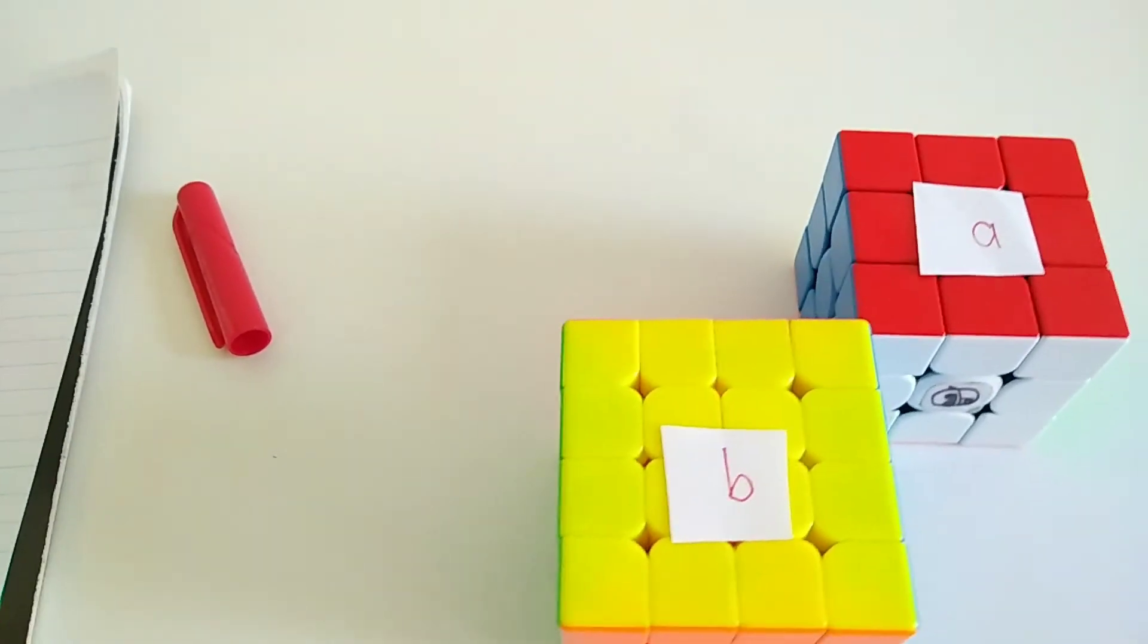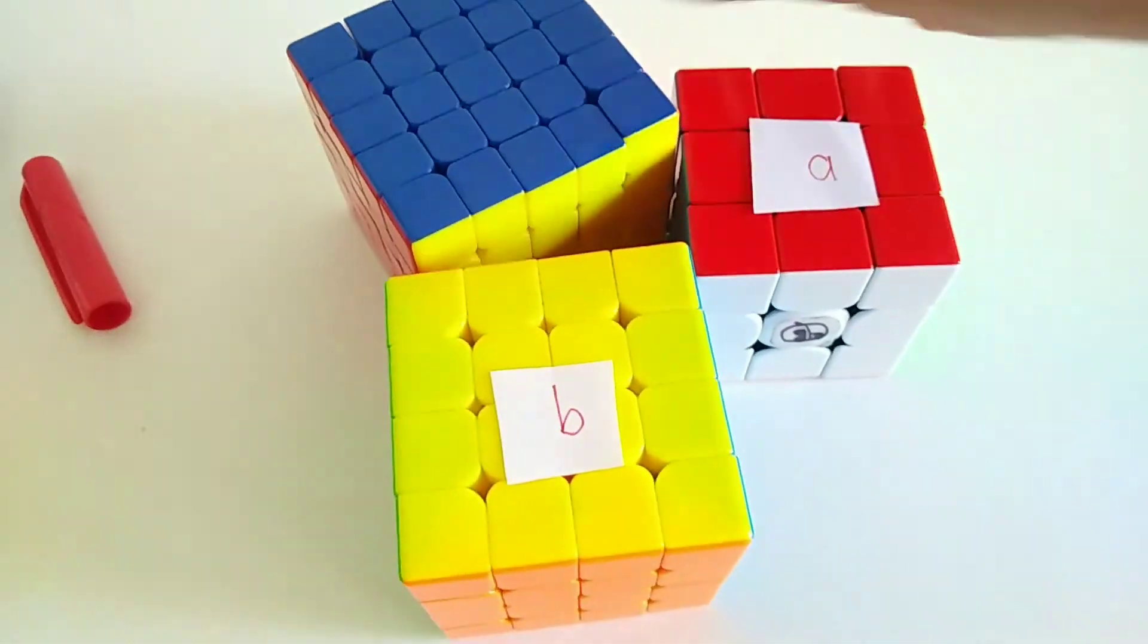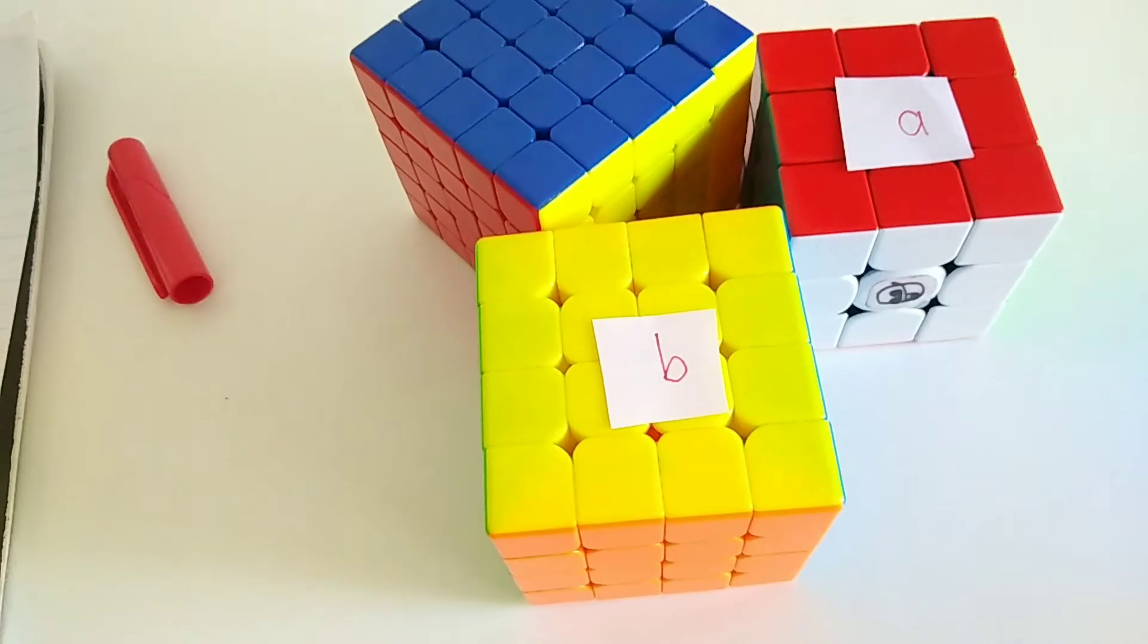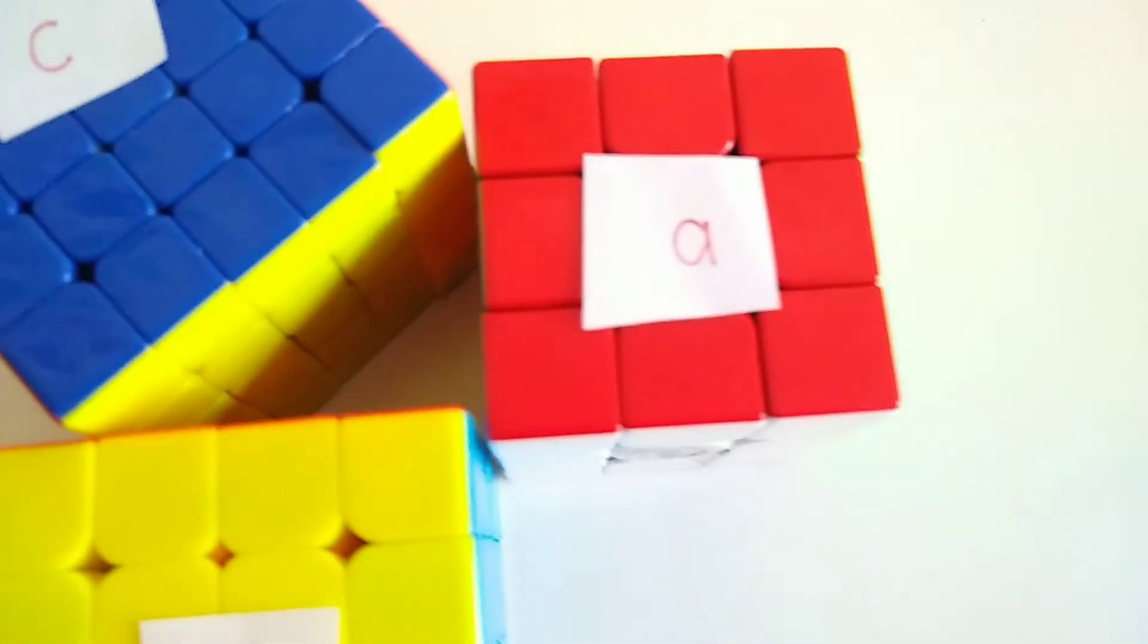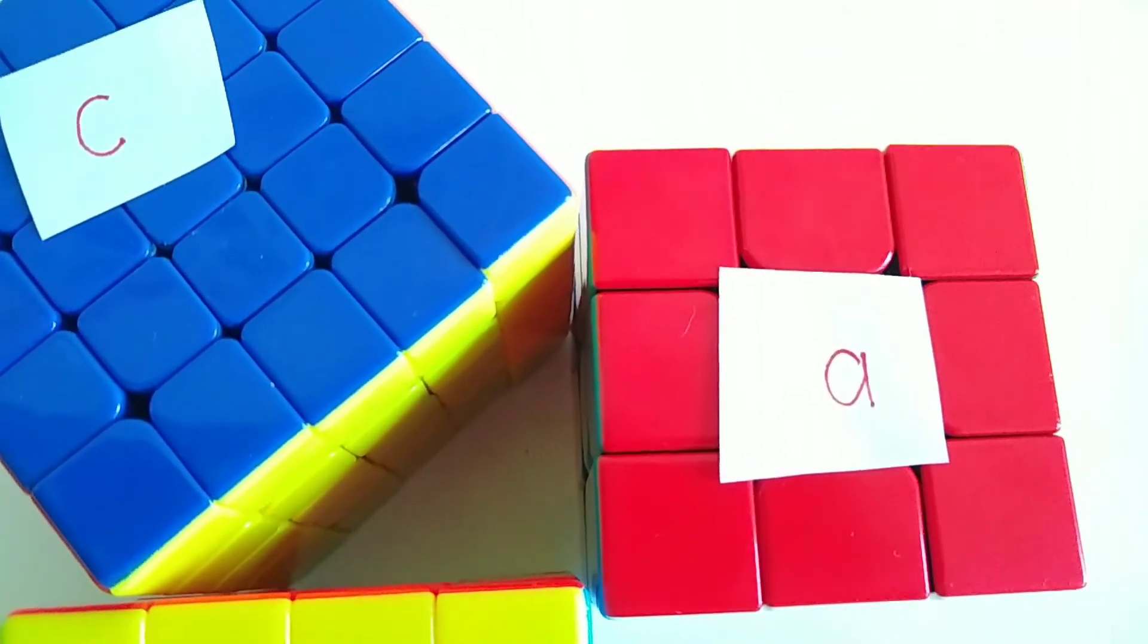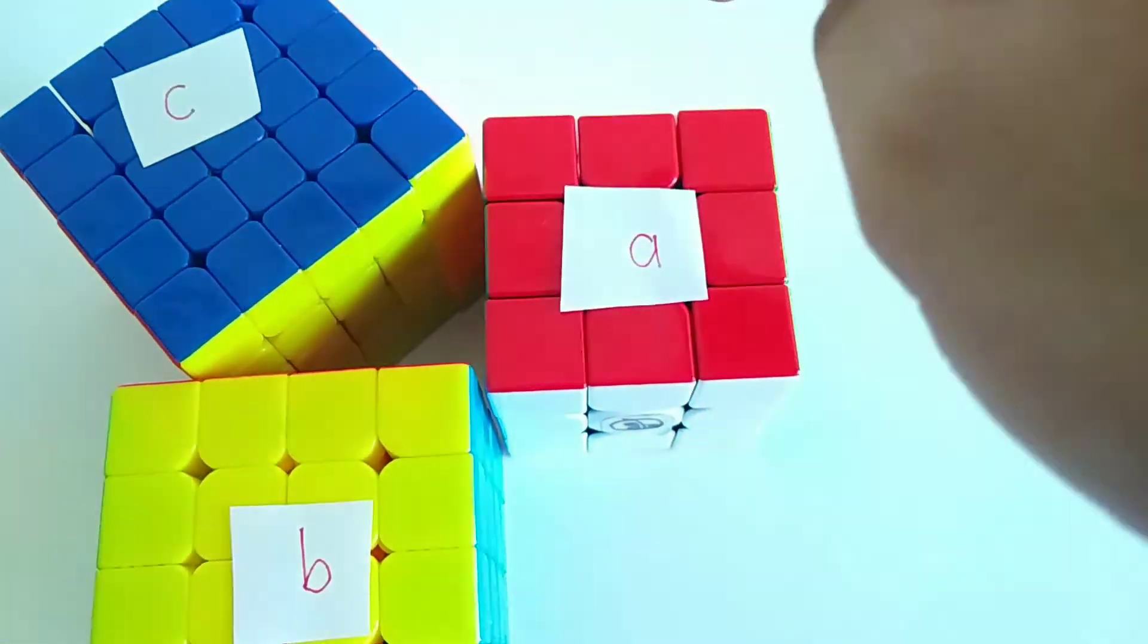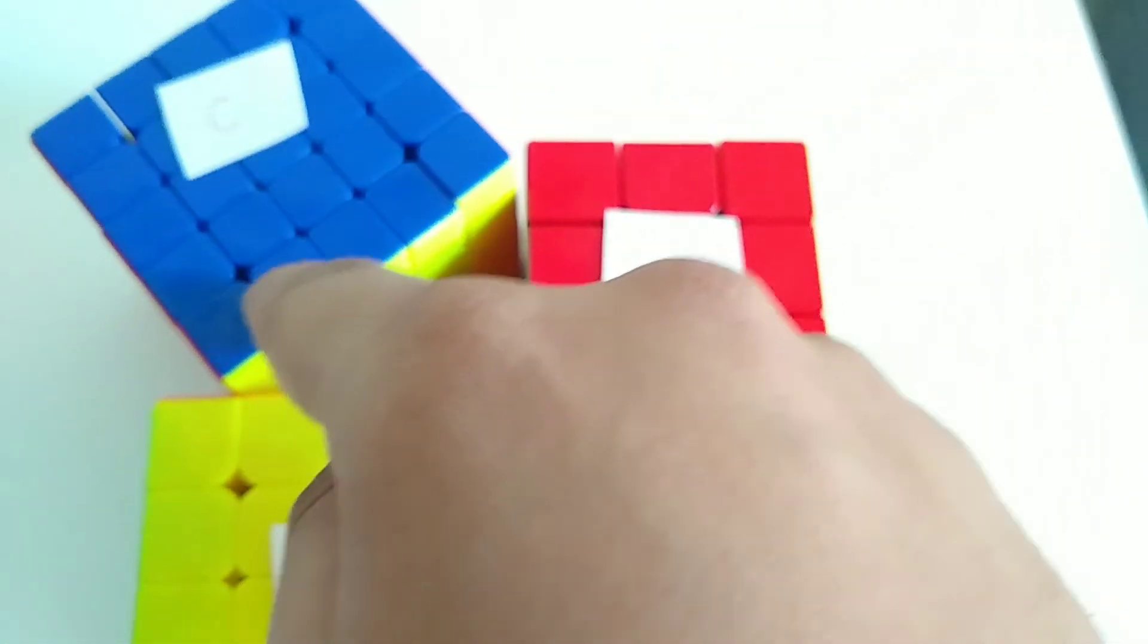And we can represent that using a 5x5 Rubik's Cube. It's not perfect, but oh well. So this will be c. And as we can see, it forms a perfect right triangle right here. So that means 3 squared plus 4 squared equals 5 squared.